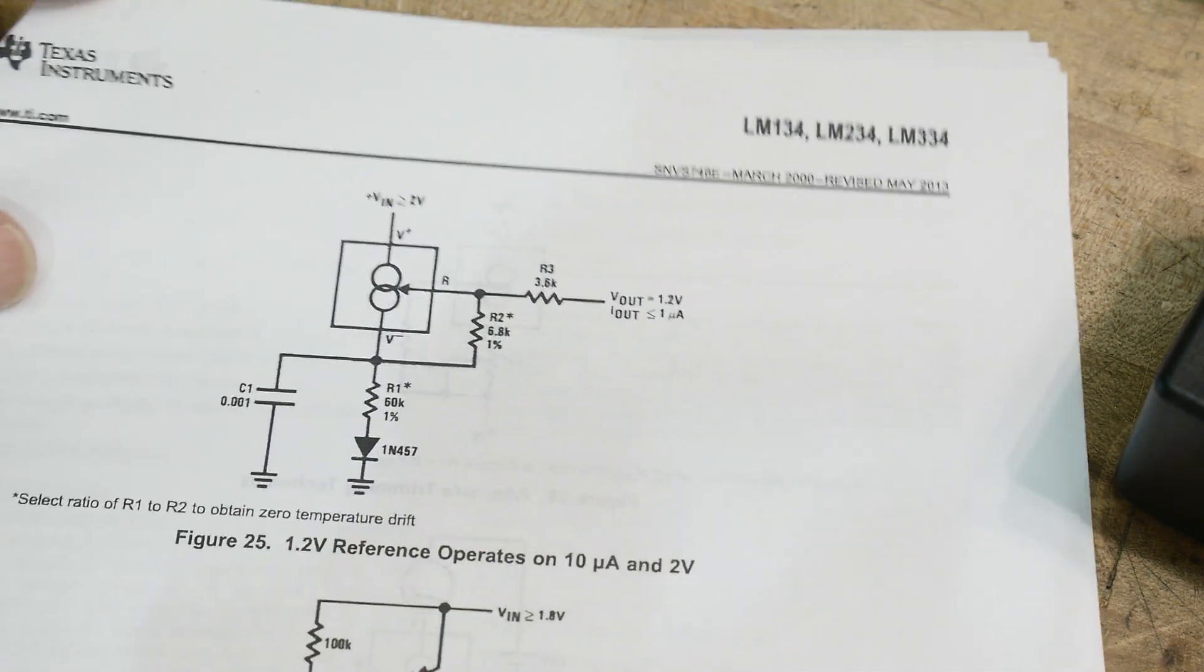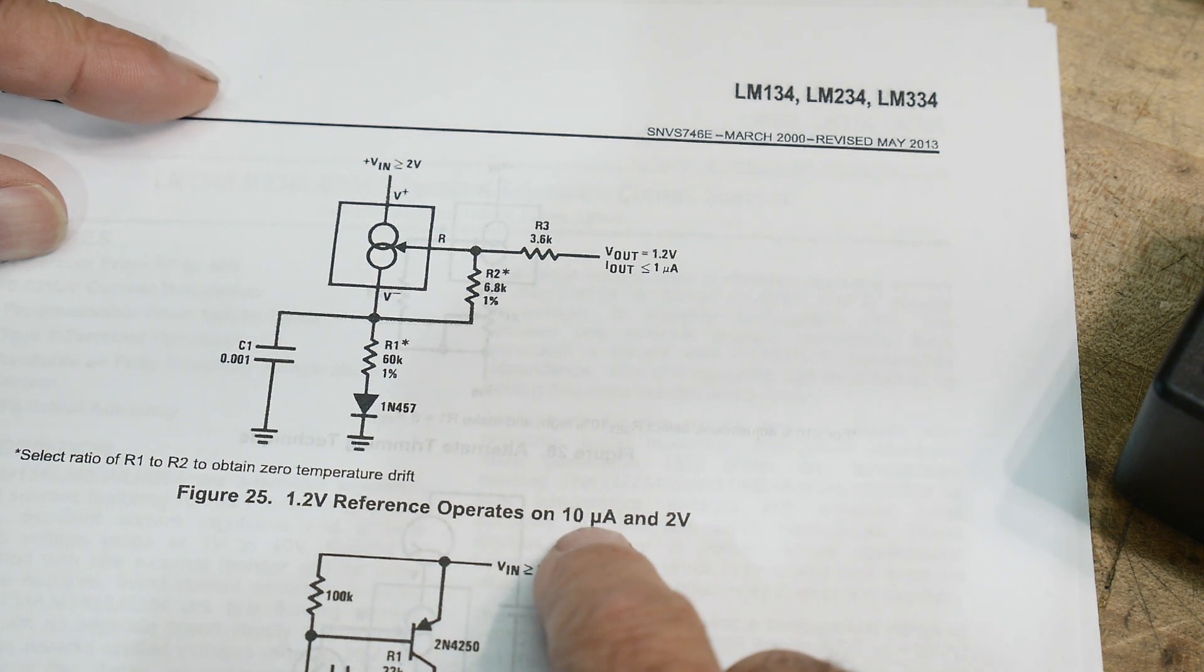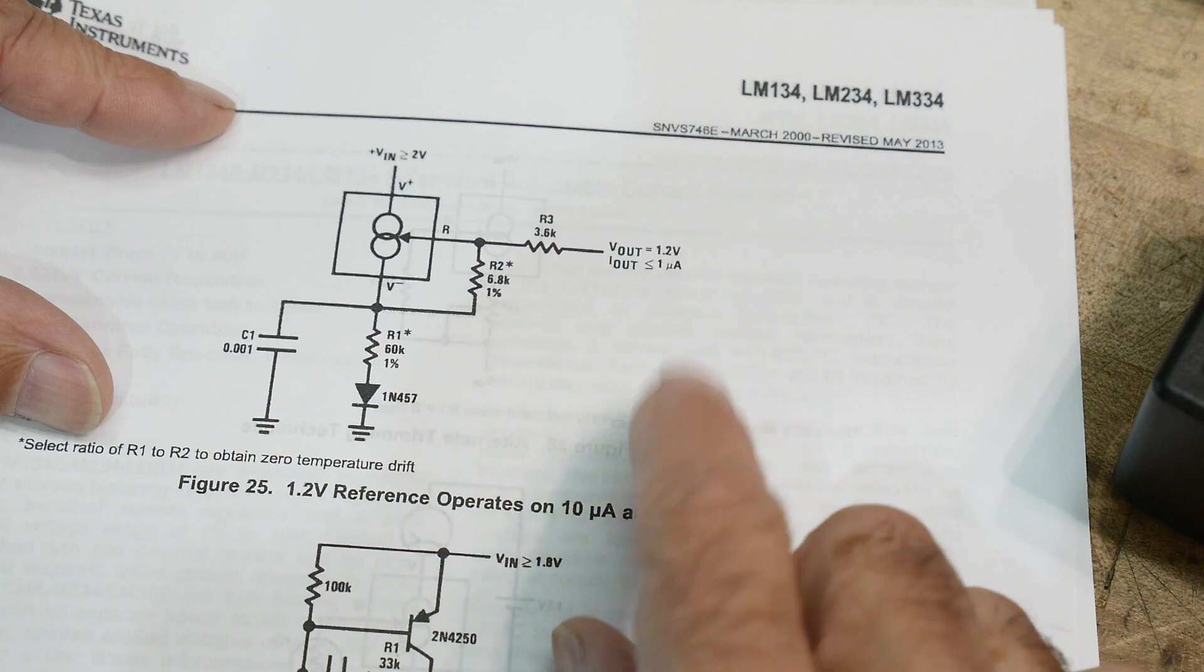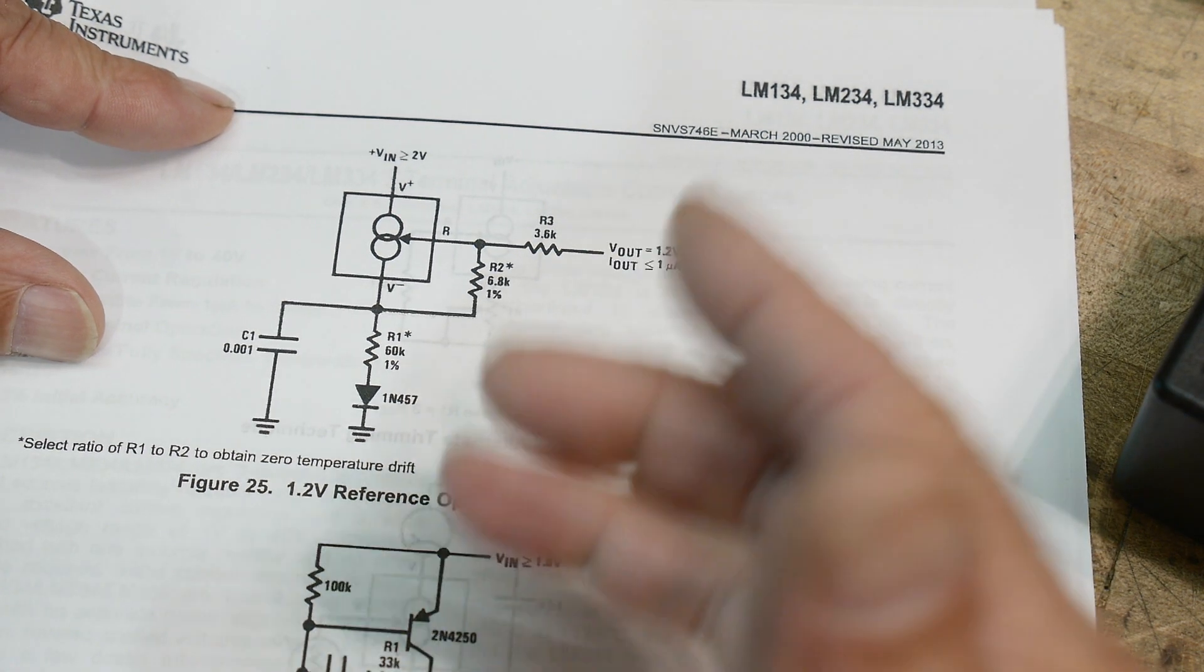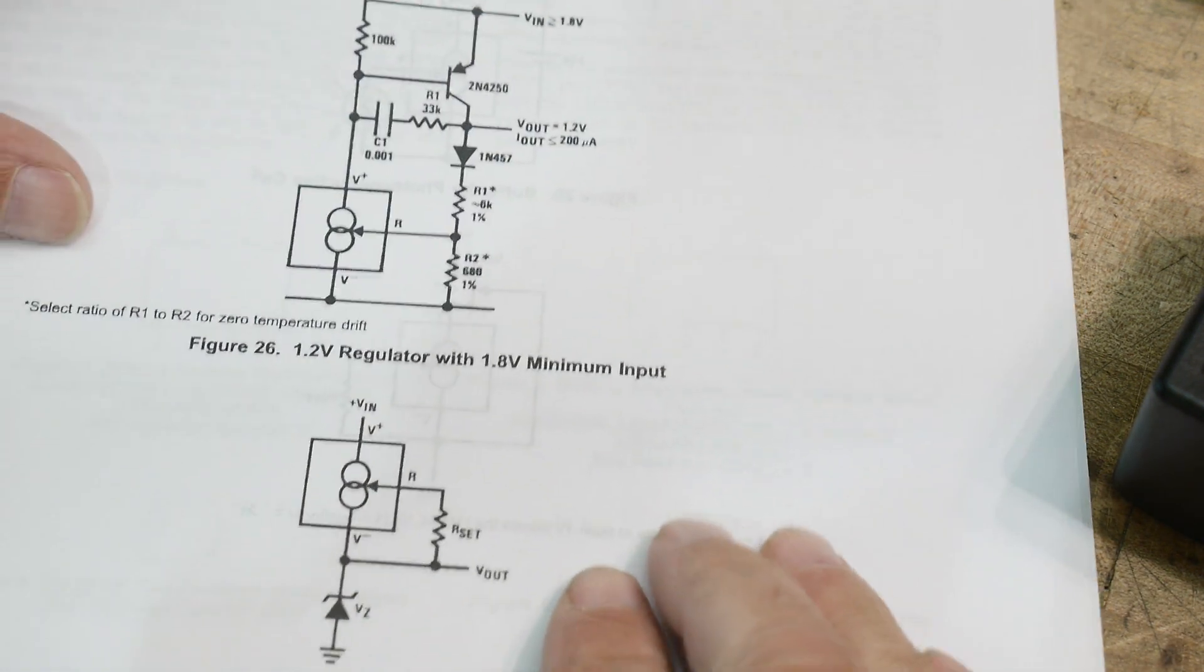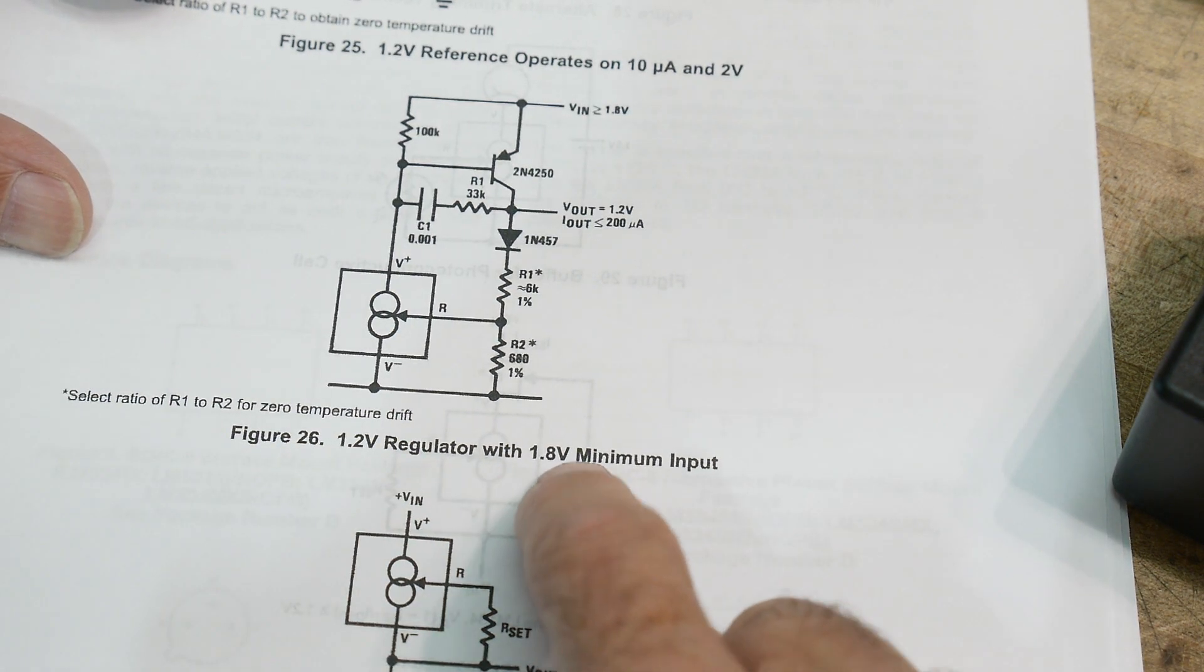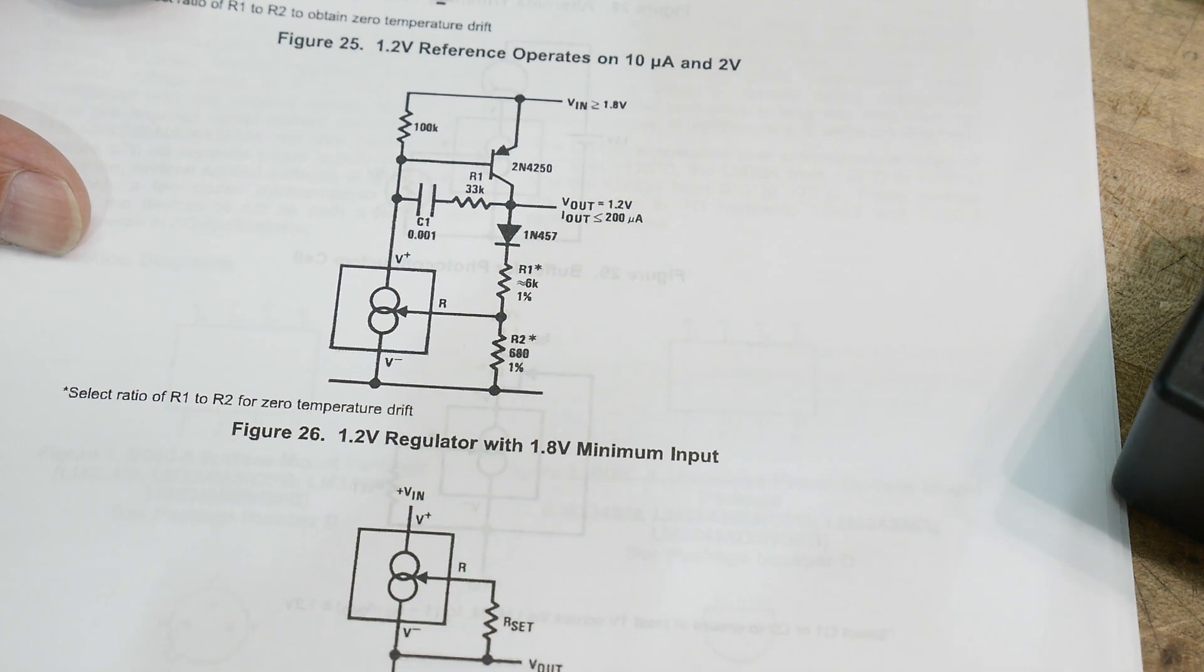Here's one for a 1.2 volt reference operates on one, on a 10 microamps and two volts. So somebody needed a 1.2 volt reference, very low current because it was battery powered. They only had two volts available and they couldn't consume a lot of energy. So they only have 10 microamps running through this. Because it operates on a low input, you can do a 1.2 volt regulator with only a 1.8 minimum input, a low voltage dropout regulator.